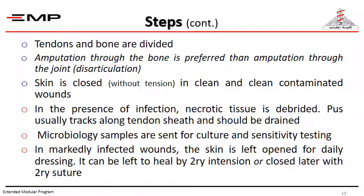Tendons and bones are divided. Amputation through the bone is preferred over amputation through the joint. Skin is closed without tension in clean and clean-contaminated wounds. In the presence of infection, necrotic tissue is debrided. The pus usually tracks along the tendon sheath — this should be observed, discovered, and drained. Microbiology samples are sent for culture and sensitivity if pus is found. In markedly infected wounds, the skin is left open for daily dressing — it can heal by secondary intention or be closed later with secondary sutures.